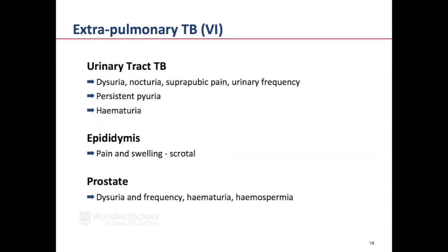In the urinary tract, many patients with urinary tract TB may present with nothing specific. However, specific symptoms include dysuria, nocturia, suprapubic pain, and urinary frequency. Urine examination often reveals casts or persistent pyuria, and there may also be haematuria. Epididymal TB classically presents with scrotal pain and swelling, while prostate TB may present with dysuria and urinary frequency. Urine from these patients may show haematuria and haemospermia.